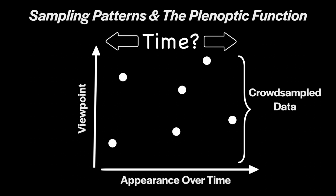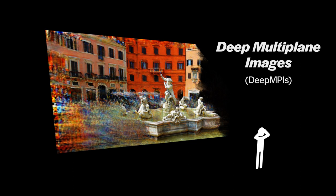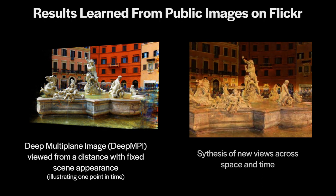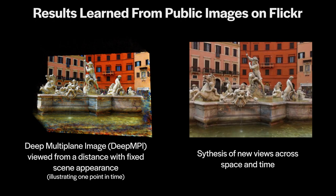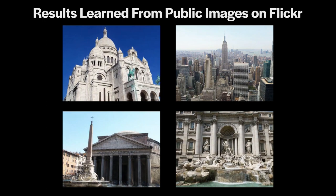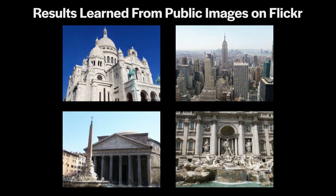And to make things even more difficult, we generally don't know when public images were taken, which makes our training data unlabeled in every dimension. So to address these challenges, we introduce a new neural scene representation called Deep Multiplane Images, or Deep MPIs, which offer a way to represent viewpoint slices of the planoptic function that interpolate meaningfully between changes of appearance that happen over time. We show that Deep MPIs can be trained on publicly available, crowd-sampled images to create windows into popular attractions from around the world.